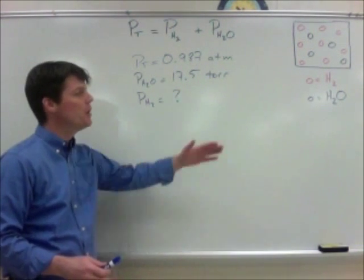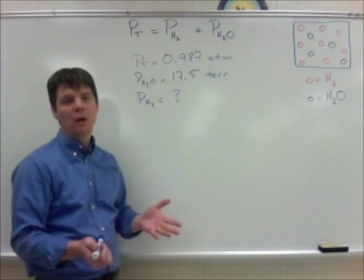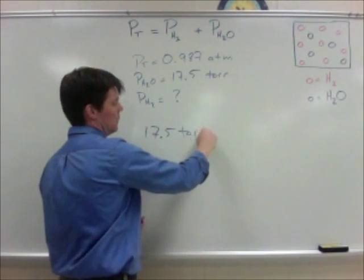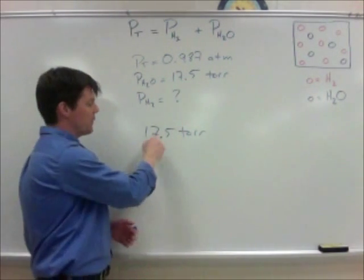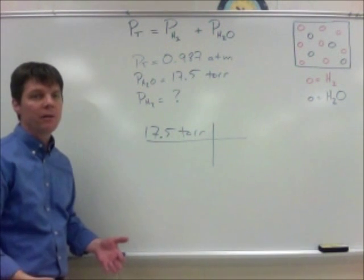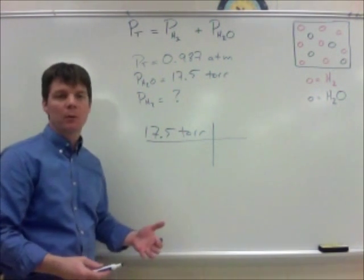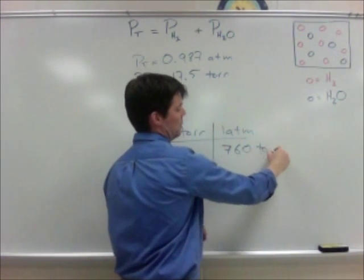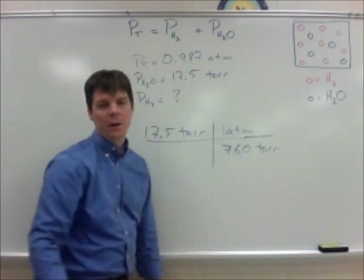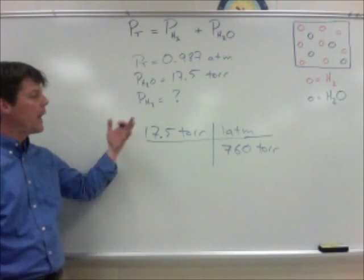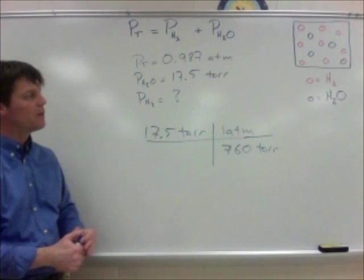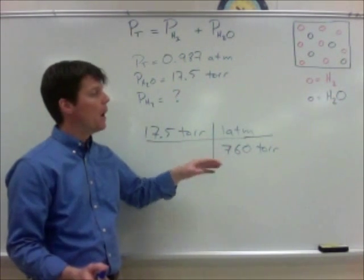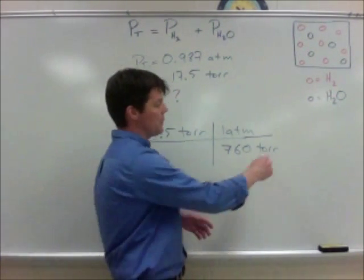Alright, let's go ahead and do that conversion. We know that we have a partial pressure of water of 17.5 torr. We want to convert this to atmospheres, so I'm going to set up my dimensional analysis. When we look up the relationship we find that one atmosphere is equal to 760 torr. So as we calculate through, 17.5 divided by 760, we should find a partial pressure for the water vapor of 0.0230 atmospheres.